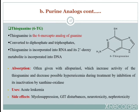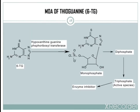Thioguanine is given with allopurinol, which increases its activity and decreases possible hyperuricemia during treatment by inhibiting inactivation by xanthine oxidase. This drug is primarily useful in acute leukemia. Side effects of thioguanine include myelosuppression, GIT disturbance, neurotoxicity, and nephrotoxicity.